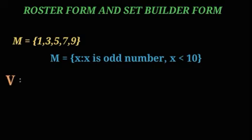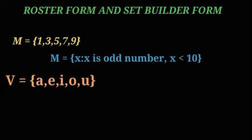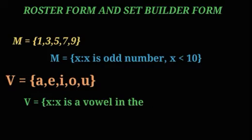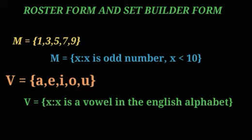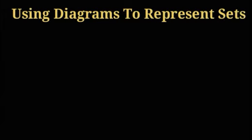Another example: V = {a, e, i, o, u} — this is roster form. The set builder form is: V = {x | x is a vowel in the English alphabet}. Now we will use diagrams to represent sets.